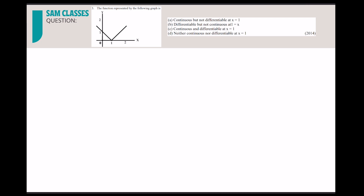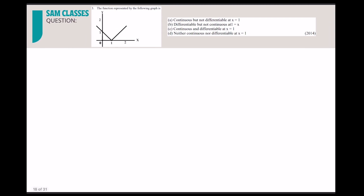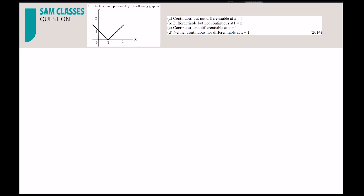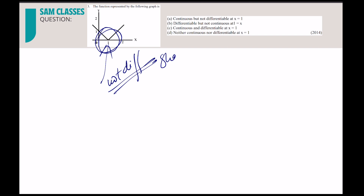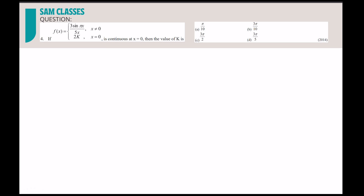Continuity means: if there is a break in the graph, it is non-continuous. Differentiability means a sharp turn — so wherever you see a sharp turn, the function is not differentiable. Remember: sharp turn → not differentiable.